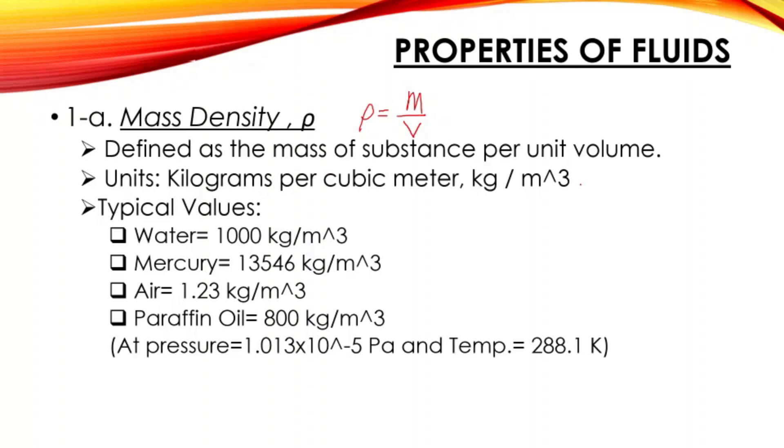The typical units for that being used is kilograms per cubic meter. Some use gram per cc. If you are using English units, then you will have pound mass per cubic foot or pound mass per cubic inch. For others, some use slugs per cubic foot. Those are the typical units for mass density. Typical values: for water, 1000 kg per cubic meter; mercury, 13,504 kg per cubic meter; air, 1.23 kg per cubic meter; paraffin oil, 800 kg per cubic meter.